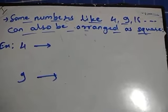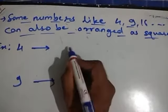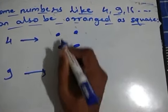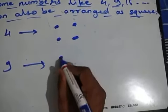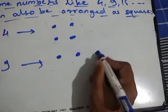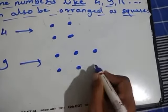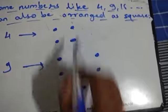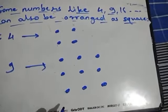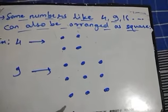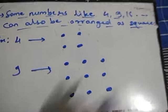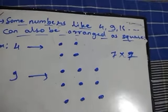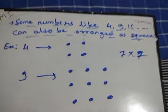Some numbers like 4, 9, 16 can also be arranged as a square. For example, 4 arranged as a 2×2 gives one square. Similarly, 9 arranged as a 3×3 gives a square. Likewise, 16, 25 (5×5), 36 (6×6), 49 (7×7), and 64 (8×8) can all be arranged as squares. Many such square numbers exist.